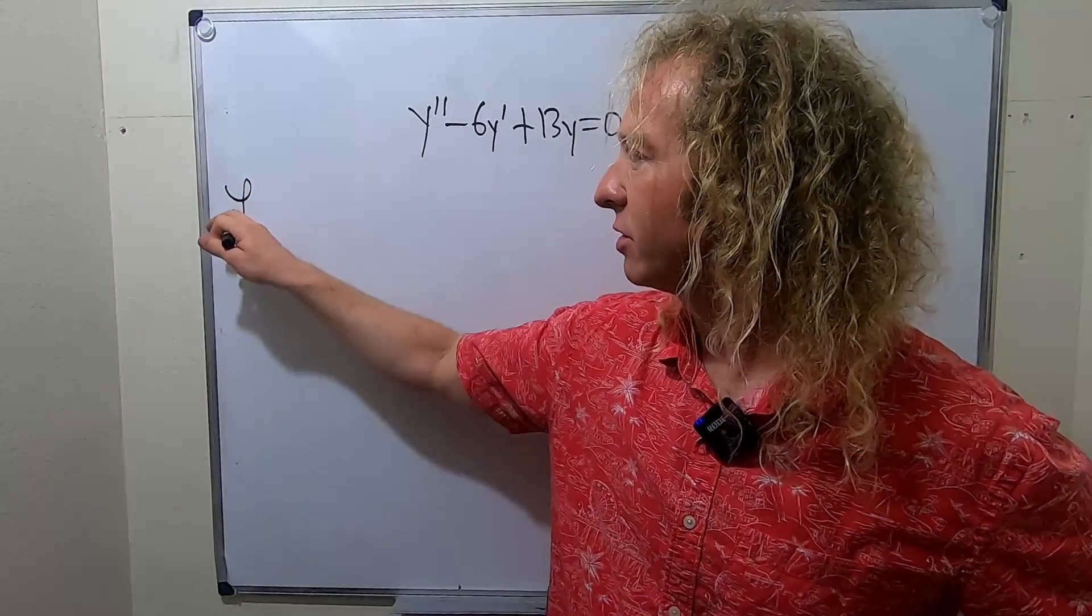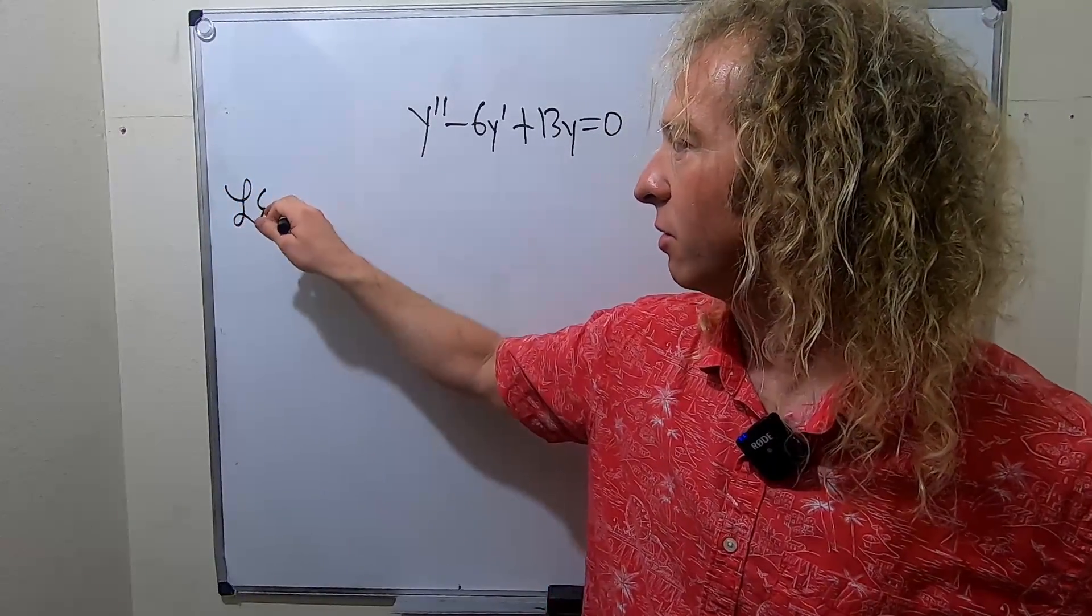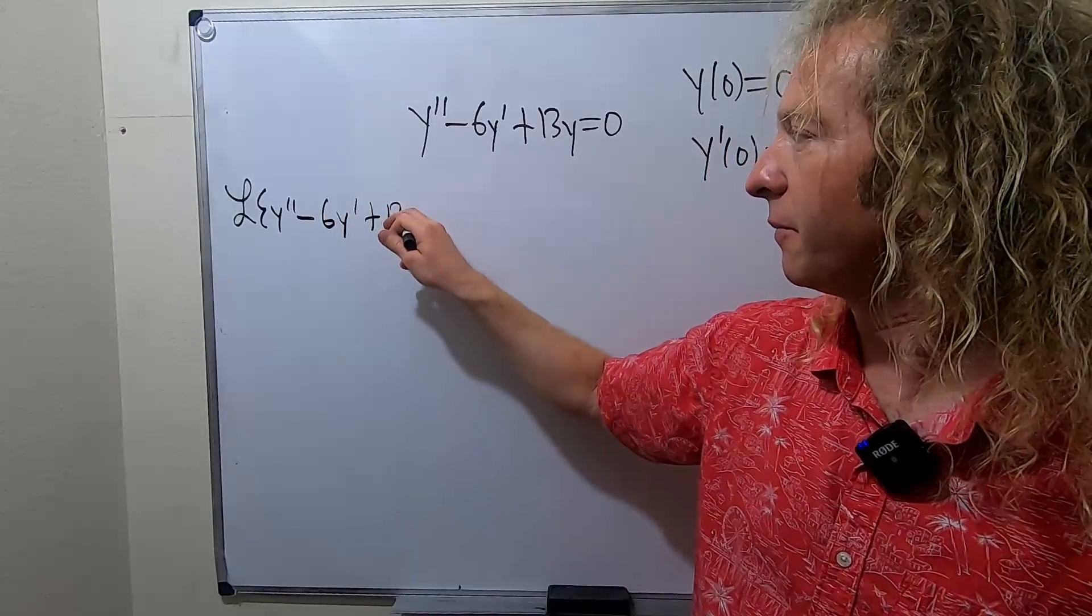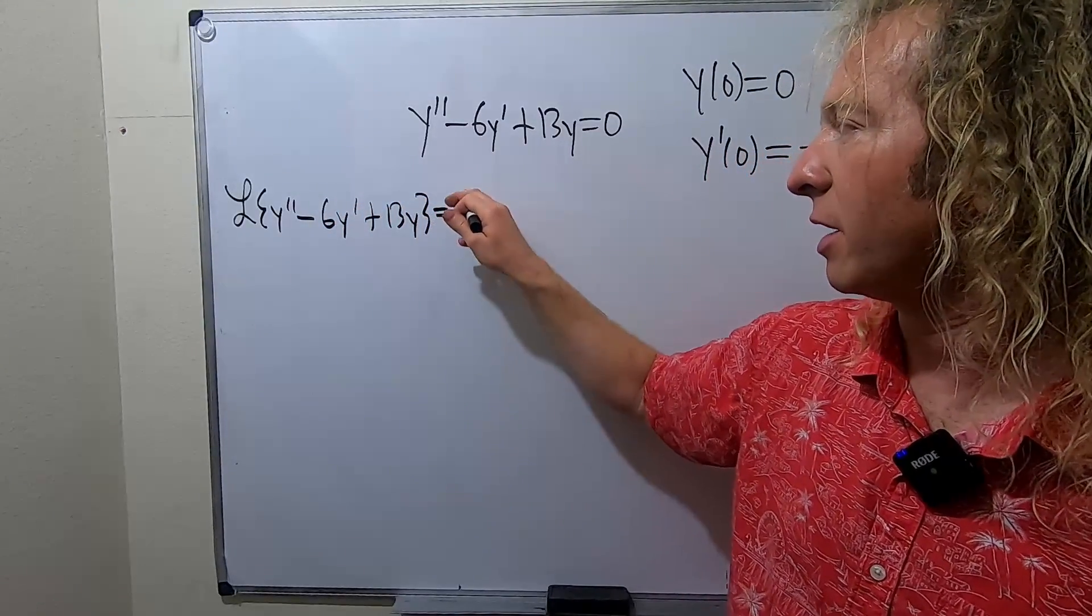So we'll start by taking the Laplace of the left-hand side. So Laplace of y double prime minus 6y prime plus 13y. That's equal to the Laplace of 0.